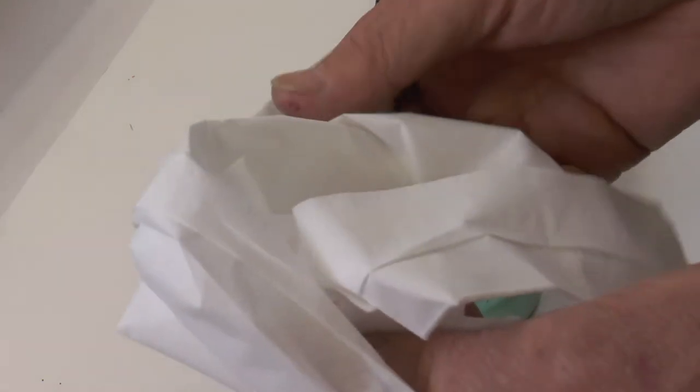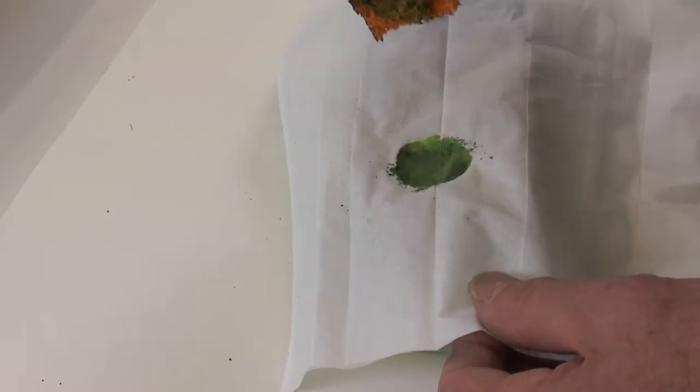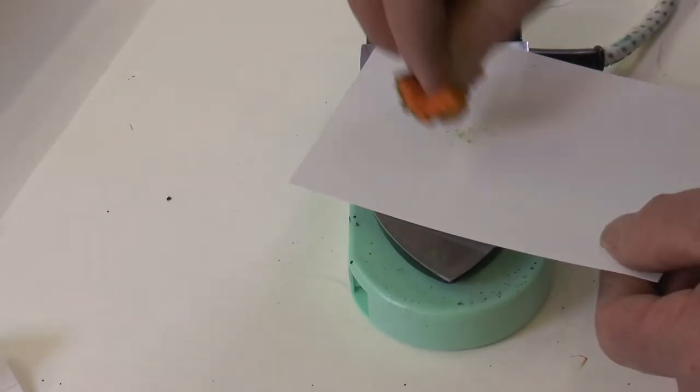For cleaning, just take your tissue, and put it here over the iron, and then place down your sponge, and press. You can see that it's clean.